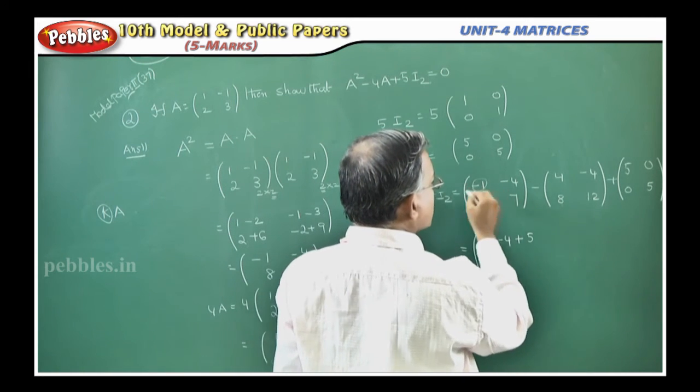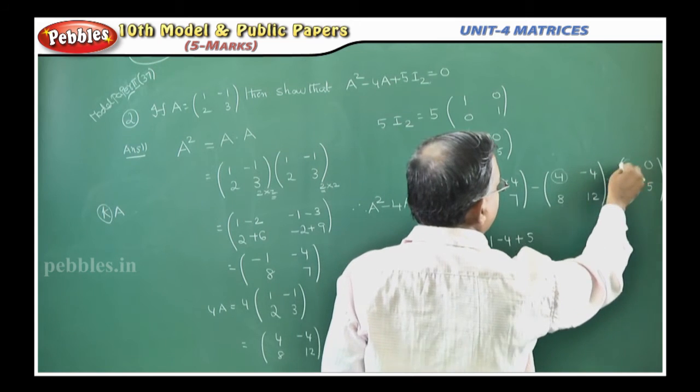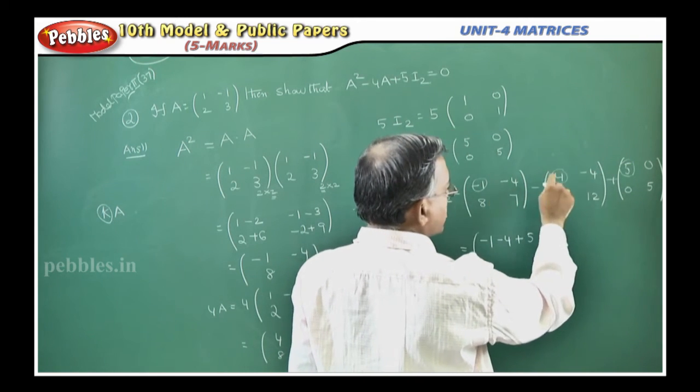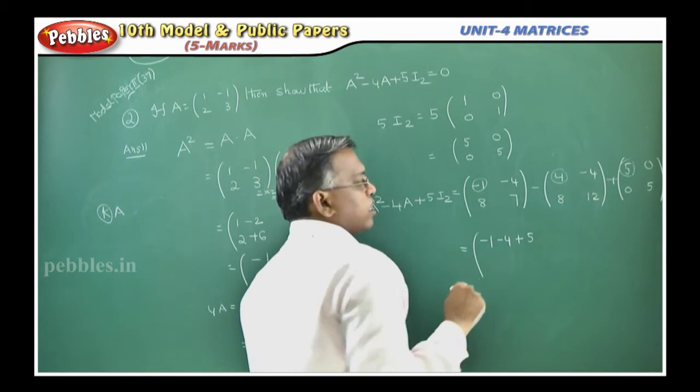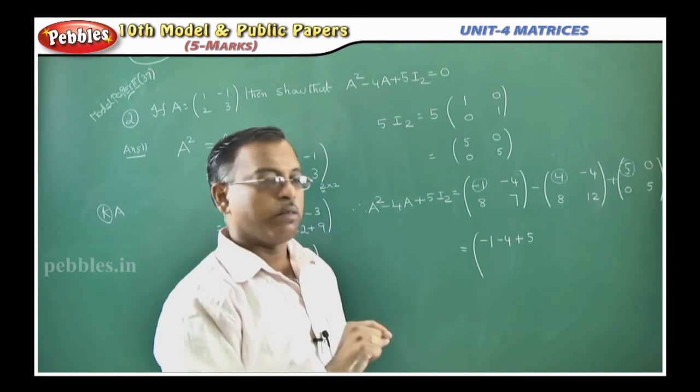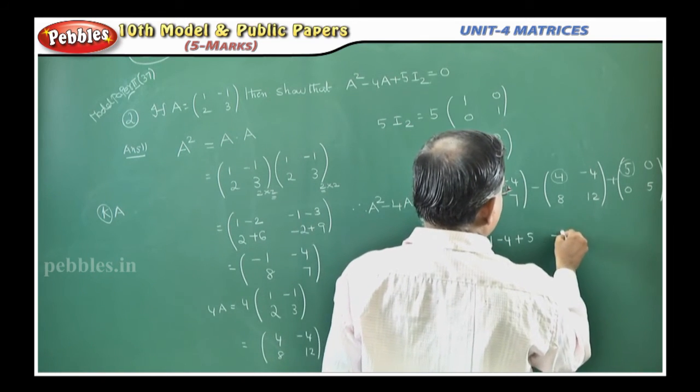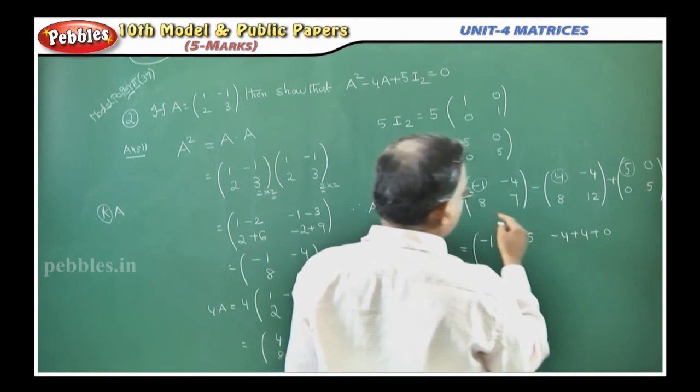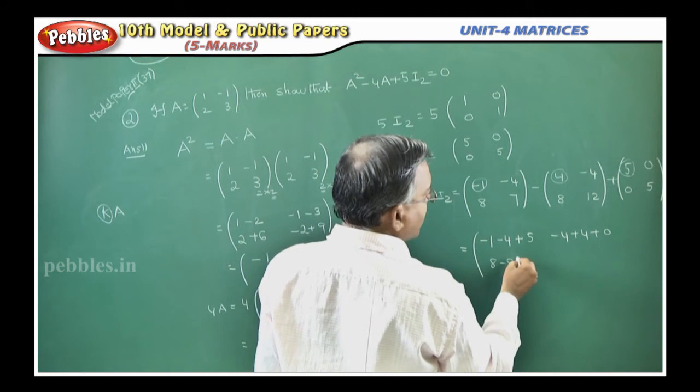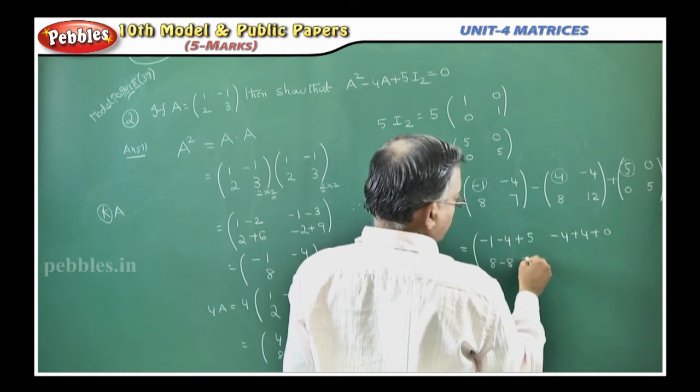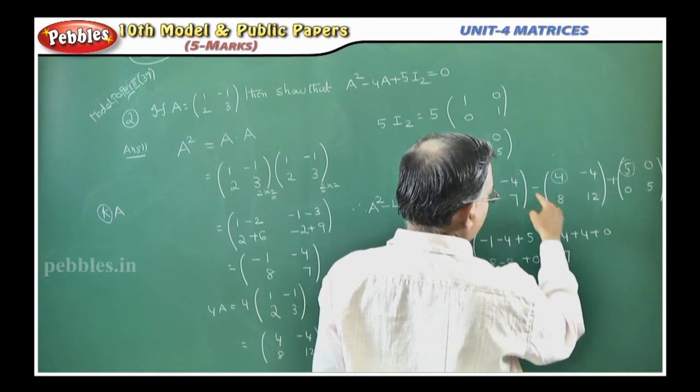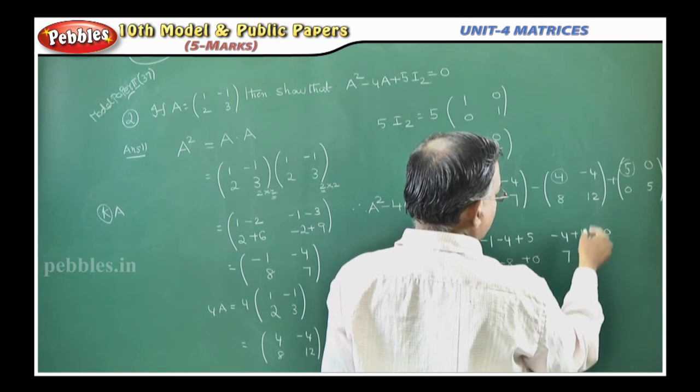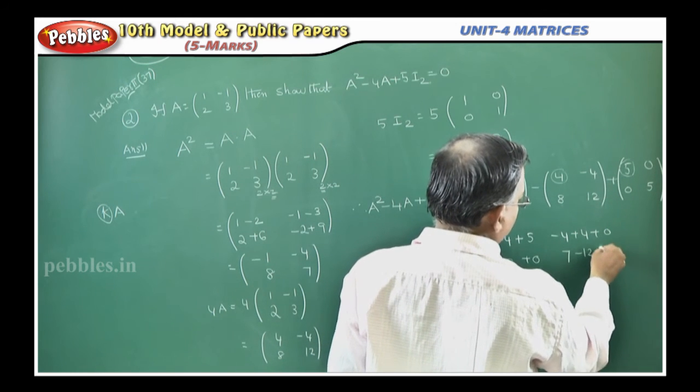For minus 1, what is the corresponding element? 4, again 5, because those are the elements present at the same position, that is the meaning of corresponding elements. Next one, minus 4, here minus into minus plus 4 plus 0. Next 8, minus 8, plus 0. Next 7, with minus you multiply minus into plus minus, minus 12 plus 5.